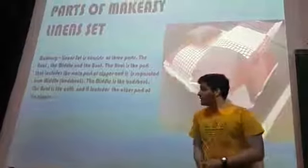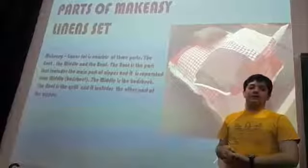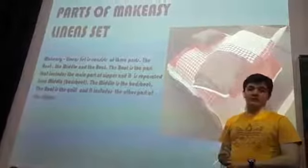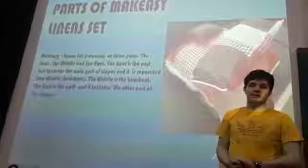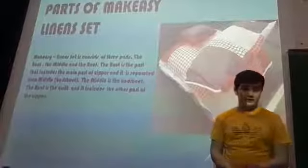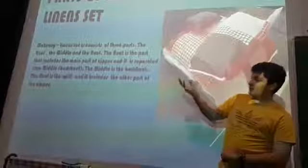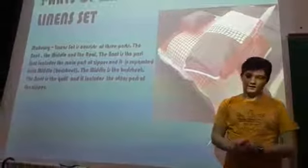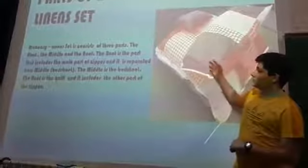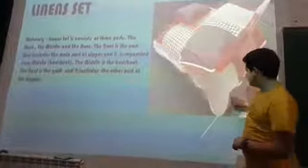Parts of my set: it consists of three main parts. First, the root. Second, the middle. Third, the roof. The root is the part which includes the main part of the zipper — the zipper is down below the bed — and it's separated from the middle. The middle is a bed sheet but it hasn't got any special functions. And the roof is a quilt and includes the other part of the zipper.